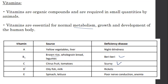Vitamin D is obtained from oily fish and milk. Both fish and milk are good sources of vitamin D. If you lack vitamin D, you will suffer from rickets, a condition where your bones are not properly shaped. Your legs may become crossed like an X shape. Vitamin D is very important for healthy bones to prevent rickets.